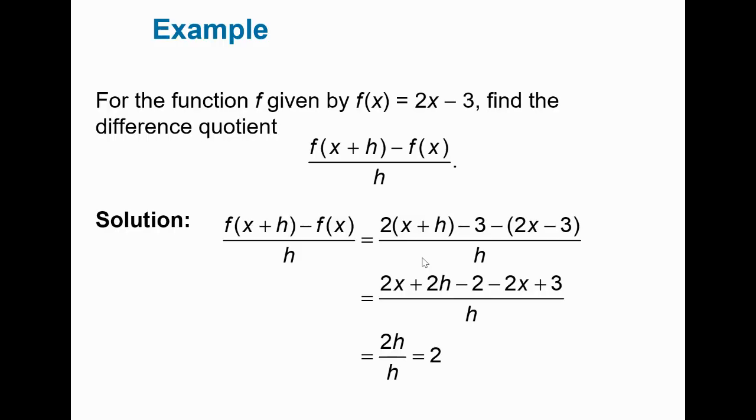For the function given by f of x equal to 2x minus 3, find the difference quotient. Well, here it is. So what he's asking me to do here is in place of x, I need to find f of x plus h. In place of x, I'm going to substitute x plus h. I'm going to subtract this f of x and then divide that difference by h. So it says 2 times x, in place of x I'm substituting x plus h. Distributing the 2, it'd be 2x plus 2h. And then there's the minus 3 minus whatever f of x is.